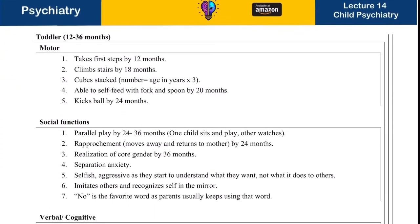In a toddler — one to three years of age — they will take their first steps by one year, climb steps by 18 months. An important rule: the number of cubes stacked corresponds to the child's age in years times three, so a two-year-old will stack six bricks. They will self-feed by 20 months and kick balls by 24 months.